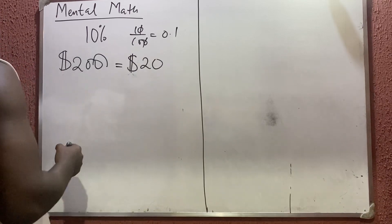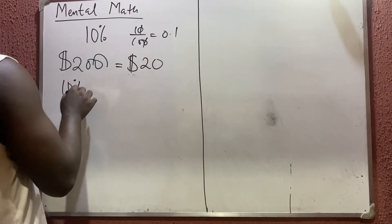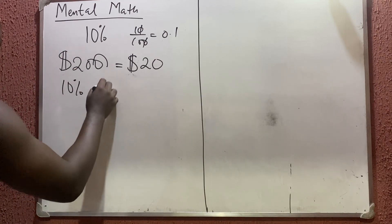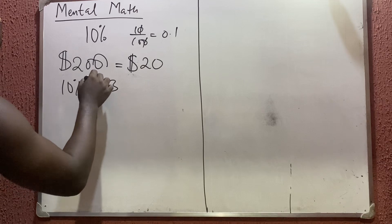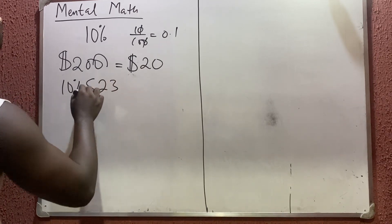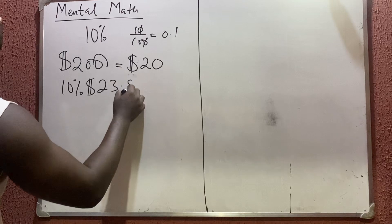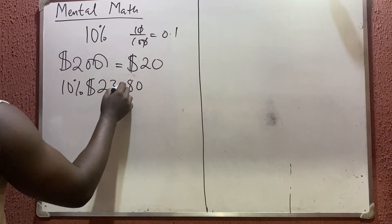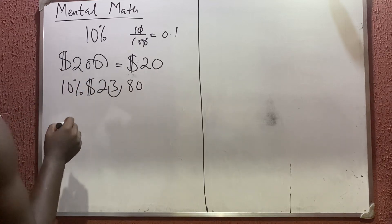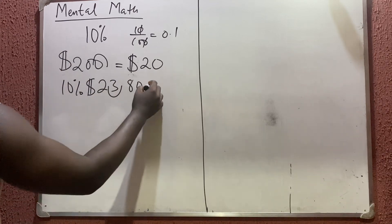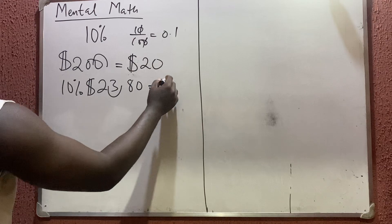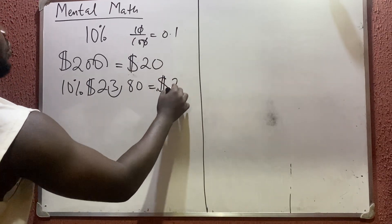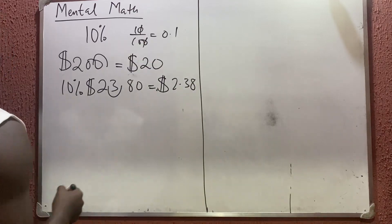So 10 percent — that is the easiest one. For example, 10 percent of 23.80 dollars: you just carry your decimal point and move it backward once. So 10 percent of that is simply 2.38 dollars. That is how to calculate 10 percent.